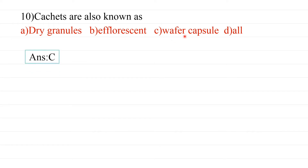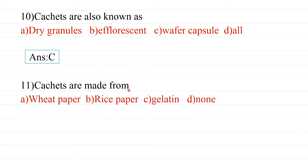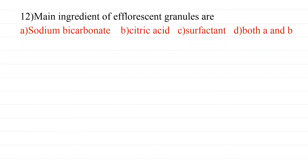Eleventh question: Cachets are made from rice paper. Twelfth question: What is the main ingredient of effervescent granules? Effervescent granules are a type of crystal that releases gas when dissolved. The options are sodium bicarbonate, citric acid, surfactant, or both A and B. The answer is both A and B — sodium bicarbonate and citric acid.